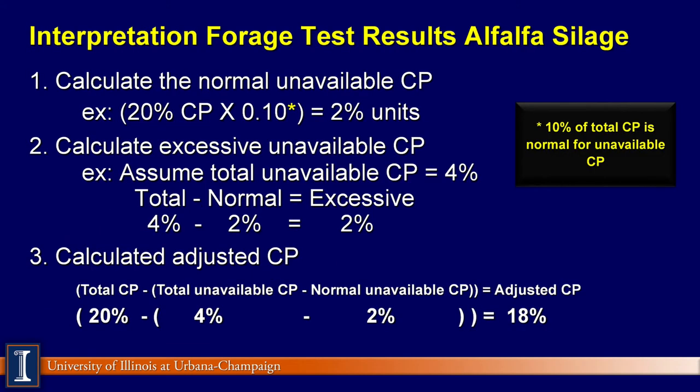The total crude protein content of forages from laboratory reports is corrected for unavailable crude protein and reported as adjusted crude protein. All forages contain some unavailable crude protein. It is generally assumed that 10% of the crude protein in forage is unavailable. More than 10% unavailable crude protein is considered excessive and should be subtracted from total crude protein to determine the adjusted crude protein used to balance rations.